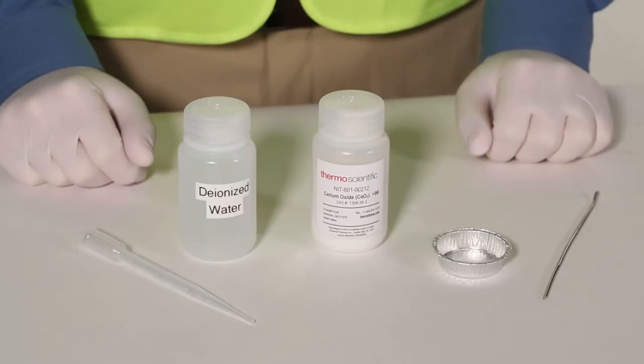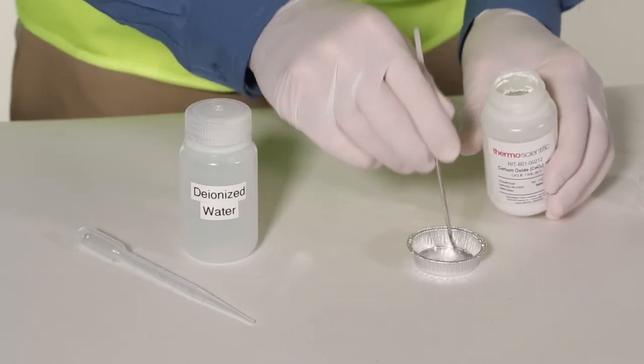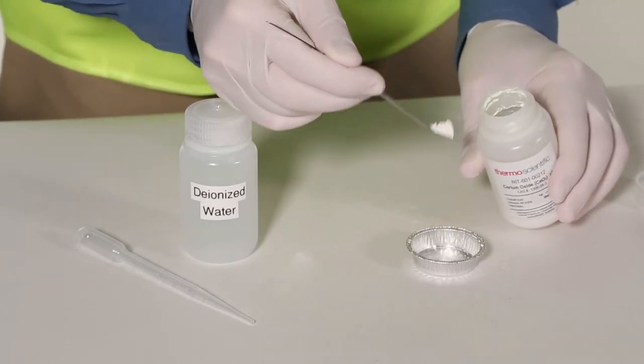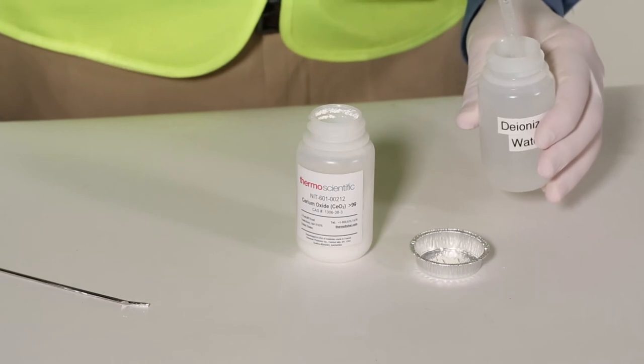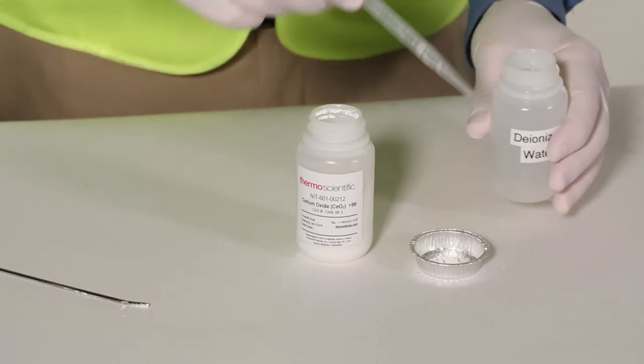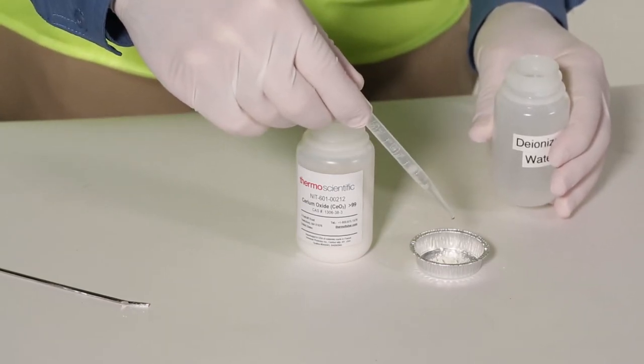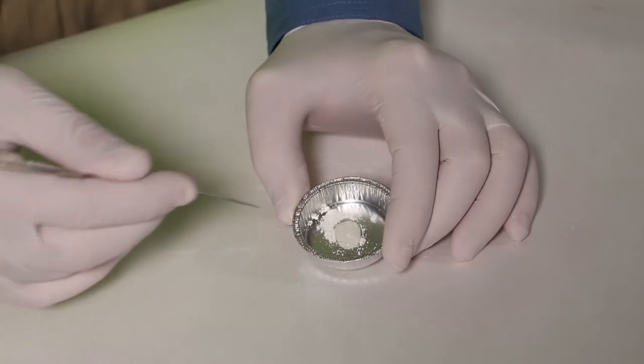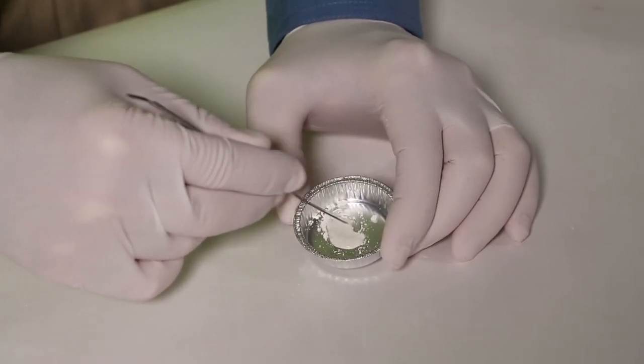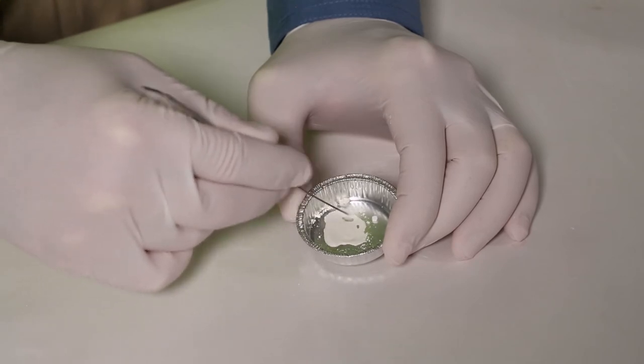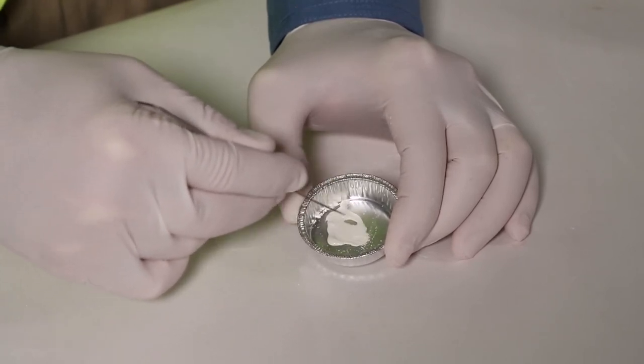Next, an opaline cleaning mixture will need to be prepared. Using the mixing spatula, place two to three scoops of opaline powder in the mixing tray. Use the pipette to transfer deionized or distilled water. Place four to six drops of water in the mixing tray with the opaline powder. Use the mixing spatula to blend both ingredients together until they form a pasty consistency, similar to that of toothpaste.